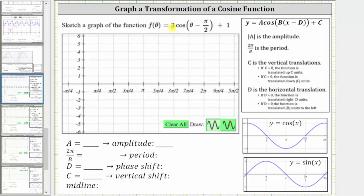First, notice a = 3, and the amplitude equals the absolute value of a. Therefore, the amplitude equals |3|, which is 3. Because a is positive, we do not have a reflection across the midline.